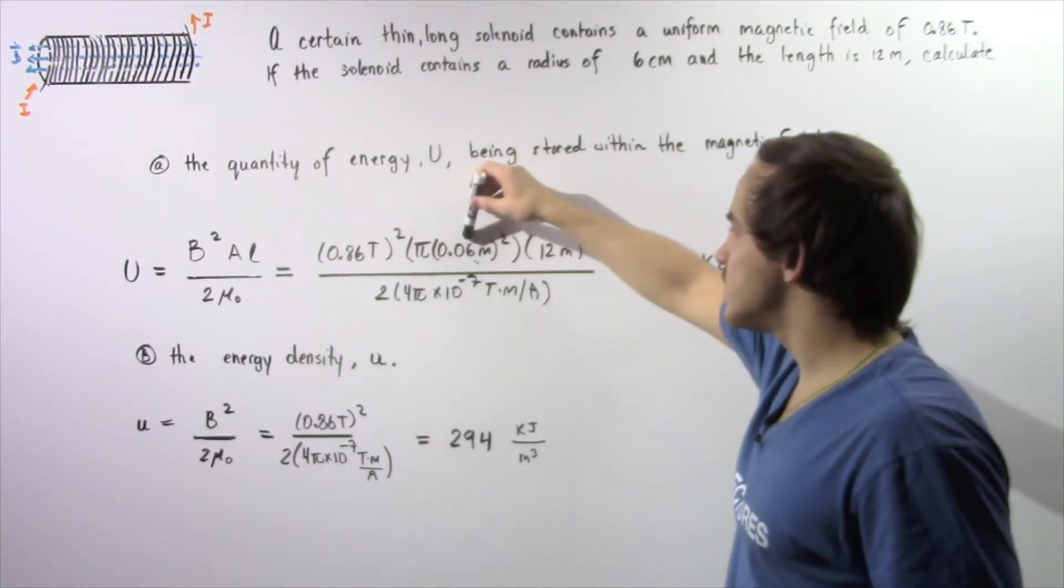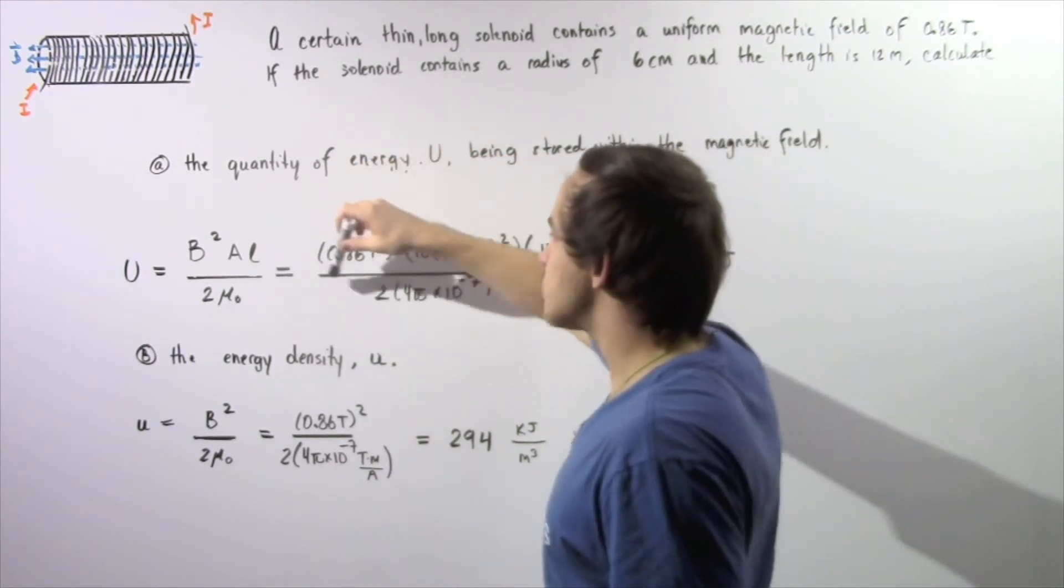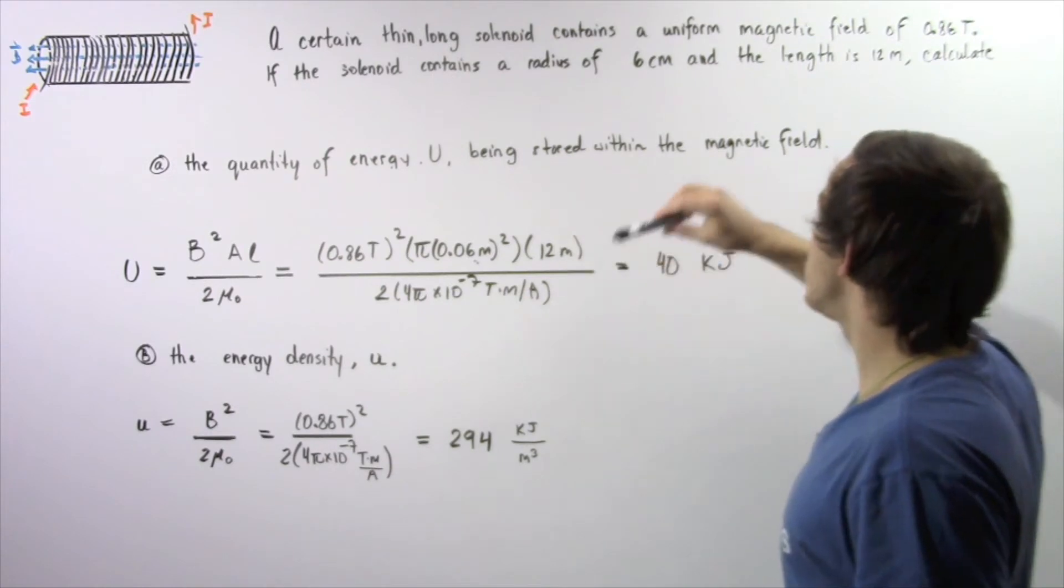So 0.06 m squared times pi is the area, multiplied by the square of our magnetic field, and multiply that by the length of 12 meters.